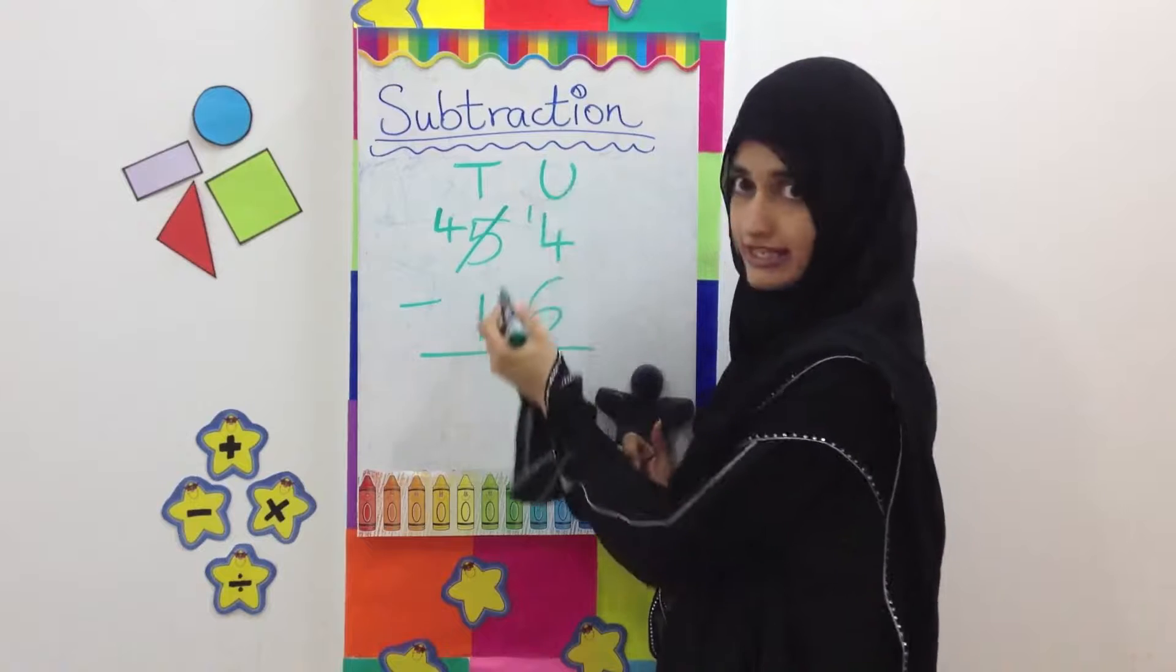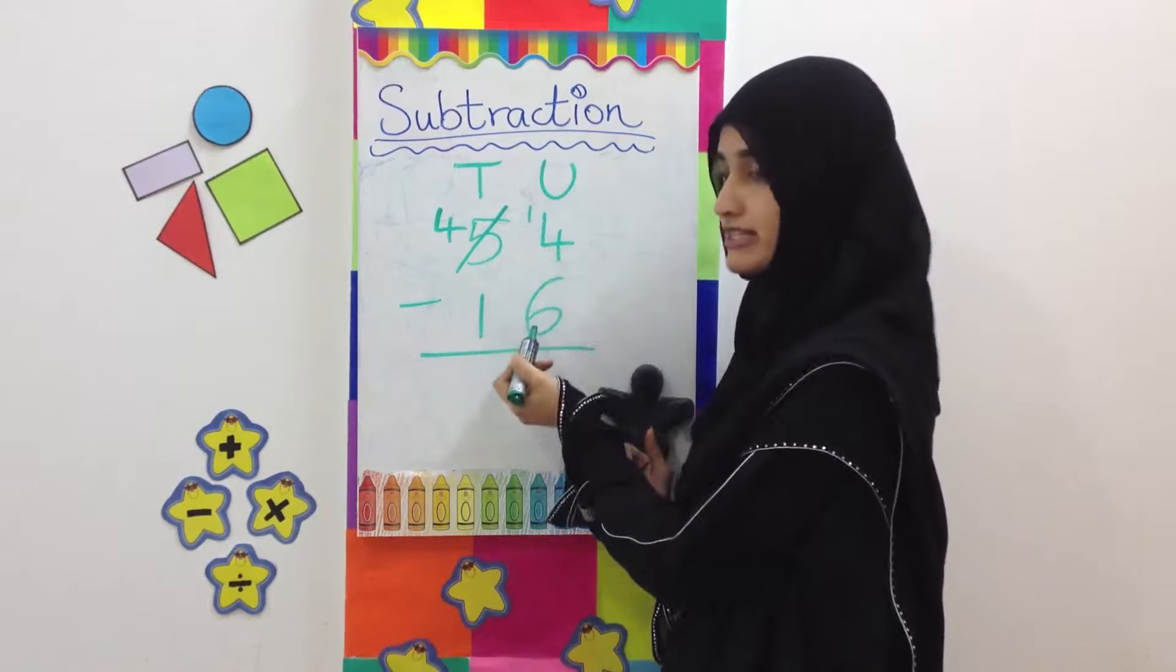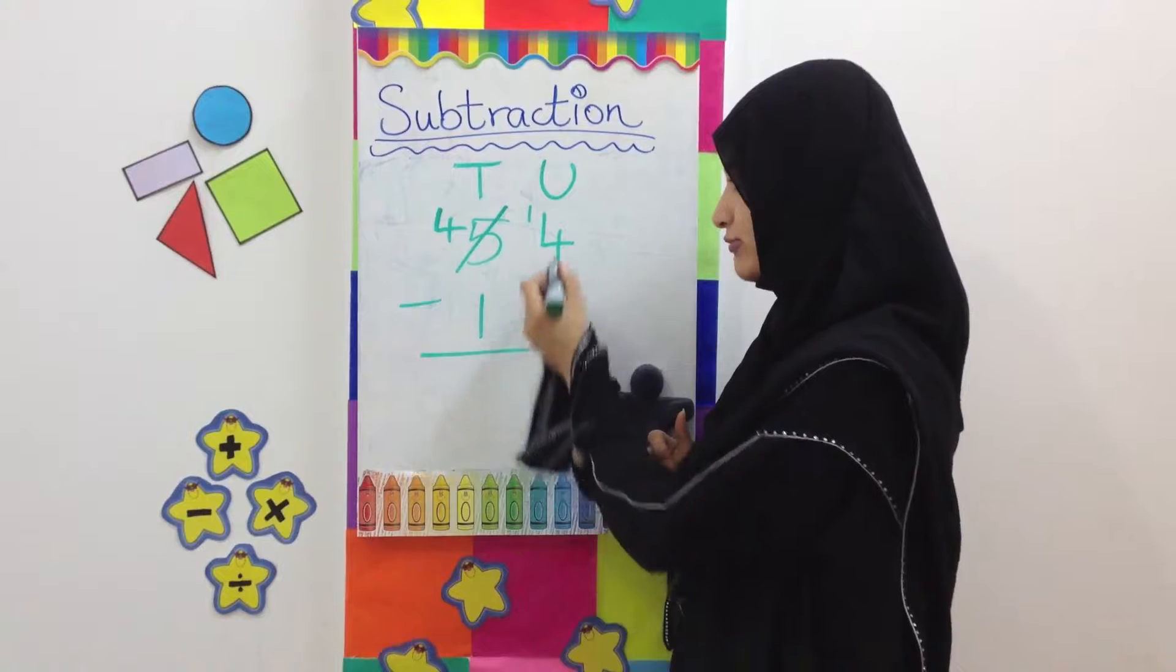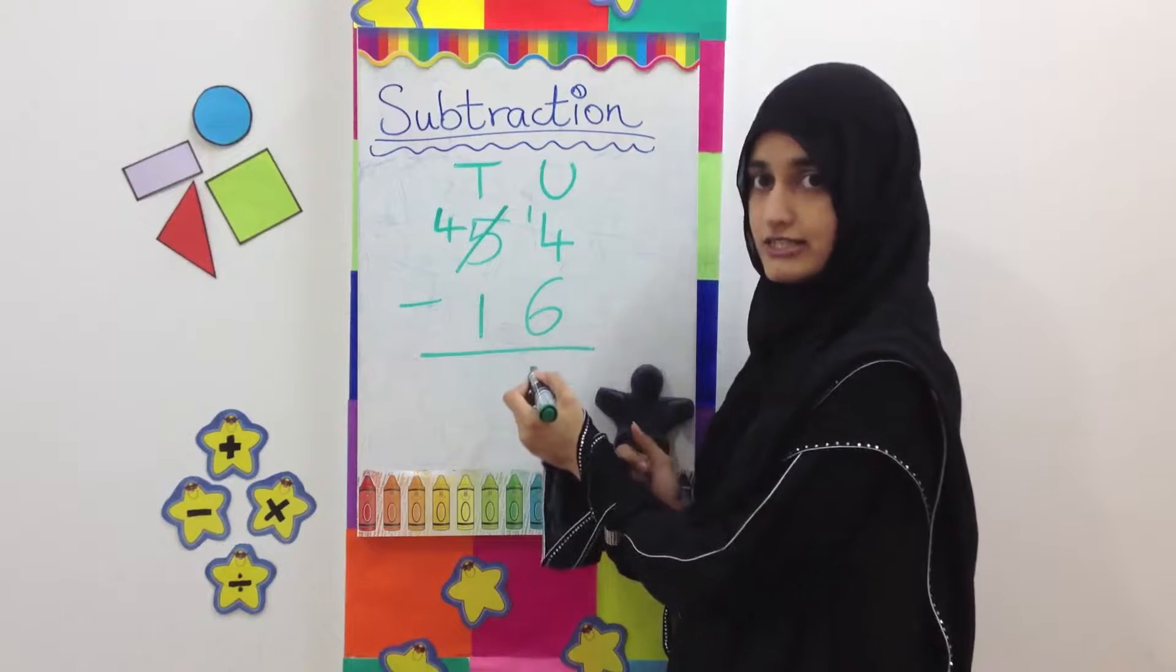The question in the unit side now is 14 minus 6 which we can solve easily. 14 minus 6 answer is 8.